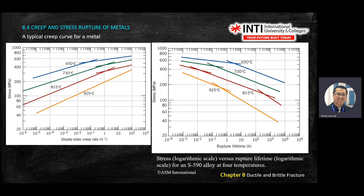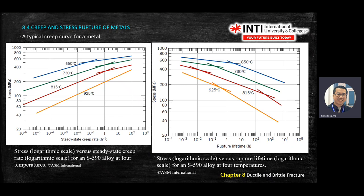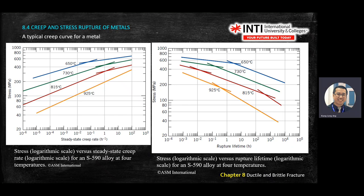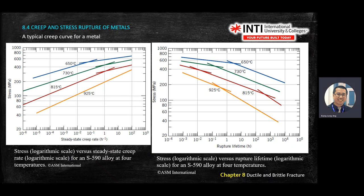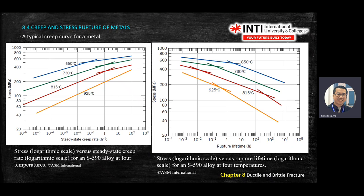This is another sample for alloy S590. The scale is a bit different — one graph uses rupture lifetime in hours, the other uses one-over-time, so the graph will flip. But the behavior is the same material; only the x-axis changes.